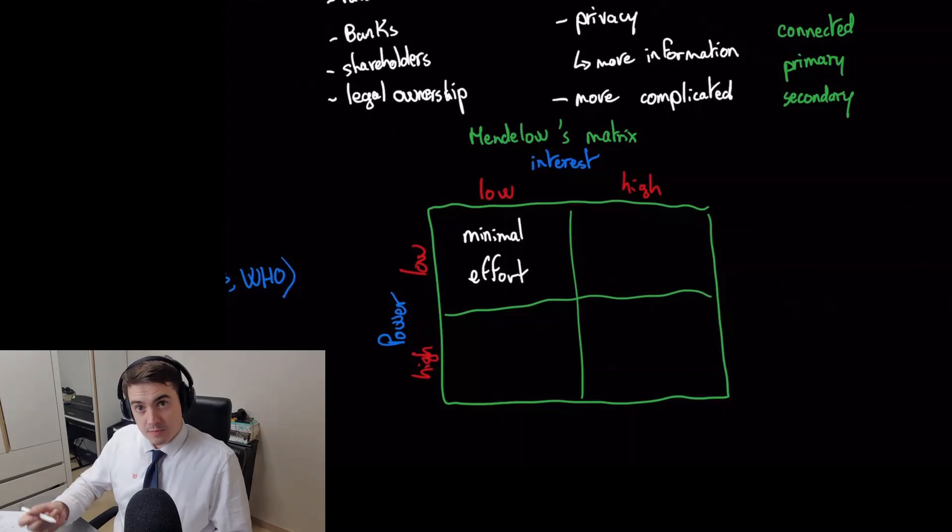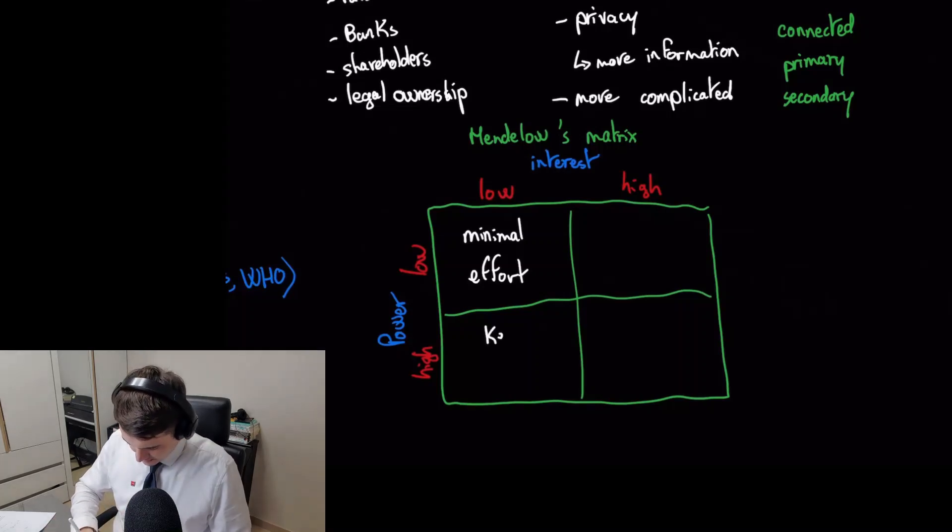What about the box below? They have low interest but high power. This could be, for example, the bank—the creditor. You made a huge loan to them. Maybe they don't really care about the day-to-day operations of your business, so they have low interest, but they have really high power over you because you have a huge loan from them. So this one will be keep satisfied.